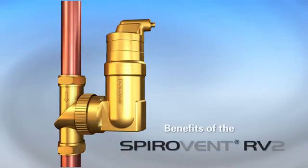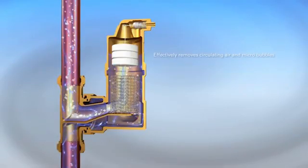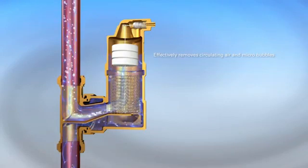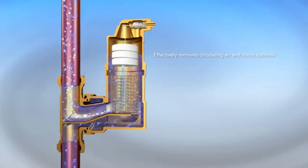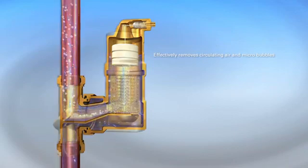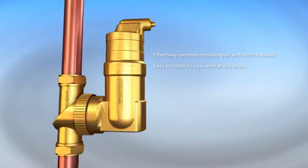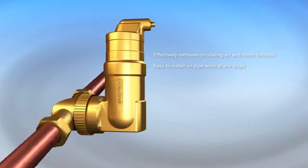Benefits of the Spirovent RV2: The Spirovent RV2 effectively removes circulating air and microbubbles. It's easy to install on pipework at any angle.